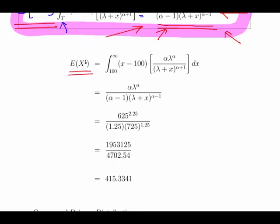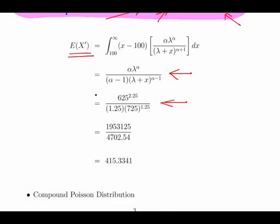So the expected value of the adjusted x is this expression here. The one I just called out when we add in the values 625 and I just spotted something, I should actually have 2.25, 625 times 625 to the power of 2.25. So I just forgot the alpha there in the denominator. Anyway, let's continue. So a bit of calculator work, you should have 415.3341. That's the expected value of the threshold.